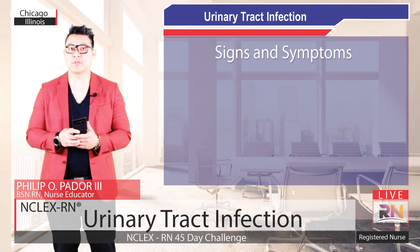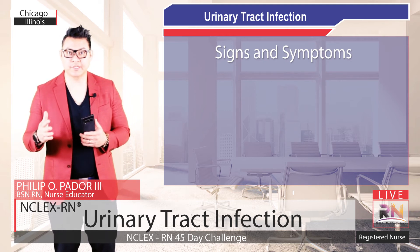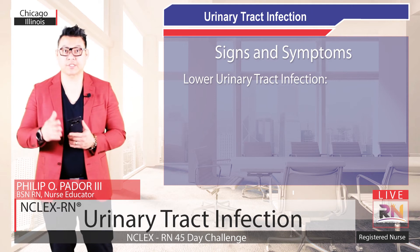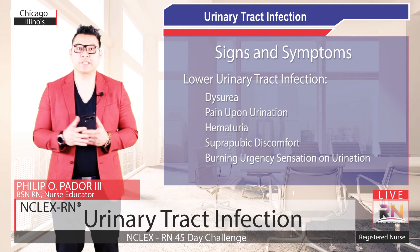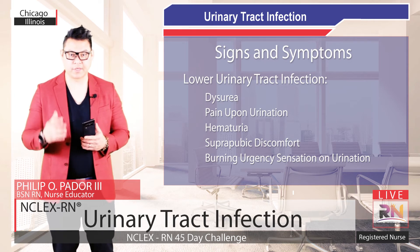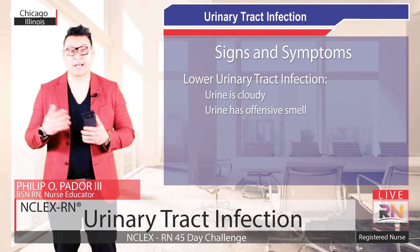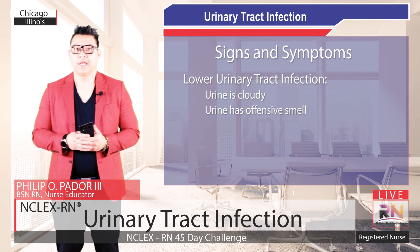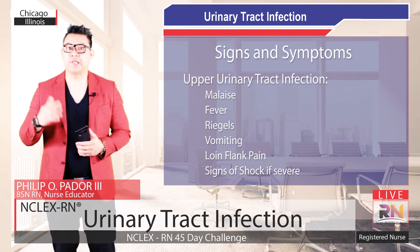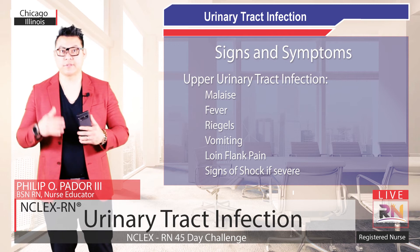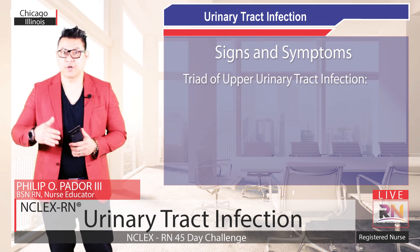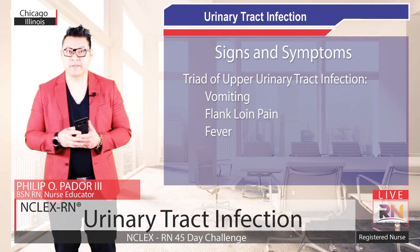The signs and symptoms of UTI depend on whether the infection is in the lower or upper urinary tract. Lower urinary tract infections cause dysuria, pain upon urination, frequency, hematuria or blood in the urine, suprapubic discomfort, and burning urgency with urination. The urine is often described as cloudy with an offensive smell. Upper urinary tract infections can have the same symptoms, but classically also present with malaise, fevers, rigors, vomiting, and loin-to-flank pain radiating to the back. There can be signs of shock if the infection is more severe. The classic triad for upper urinary tract infection — pyelonephritis — is vomiting, flank pain, and fever.